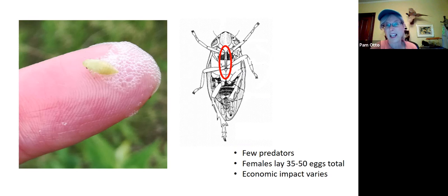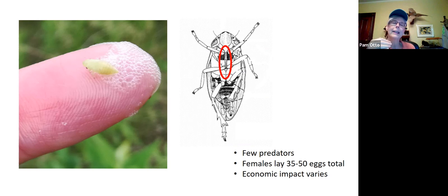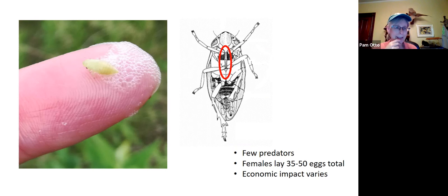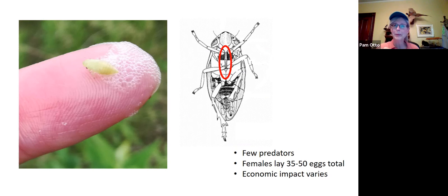Spittle bugs can have some economic impact depending on the plants they're feeding on — a large infestation could cause damage to crops — but around here we mostly see them in natural areas and they don't severely impact the plant's ability to grow. So as you're out and about, keep your eyes open for big wads of bubbles hanging off plants, and if you dare, go ahead and swipe into them to find a little baby spittle bug.